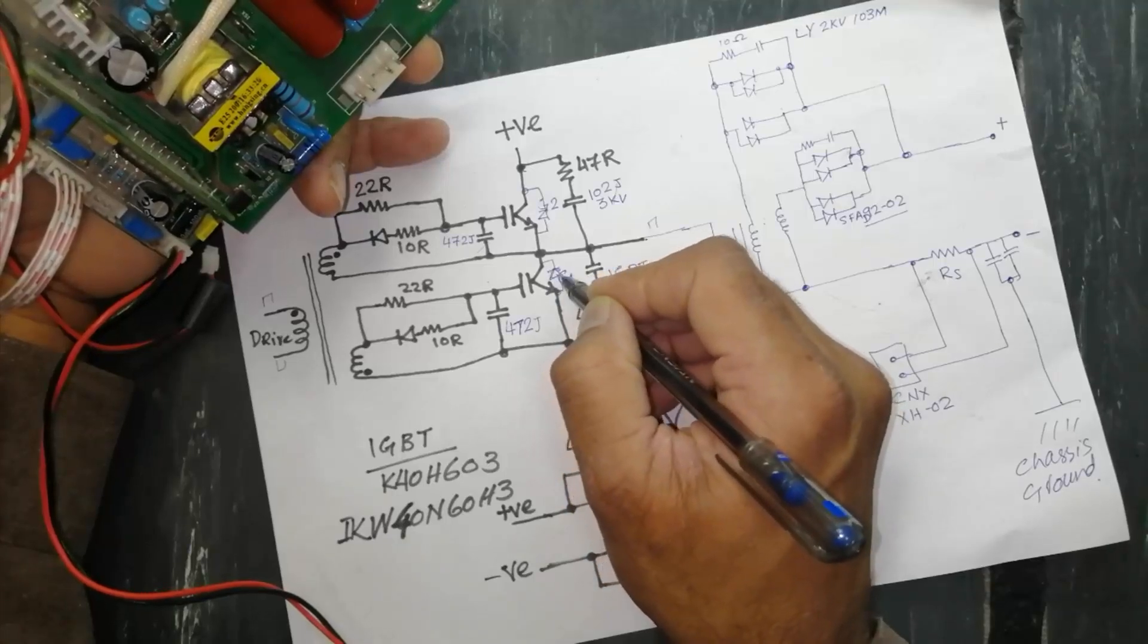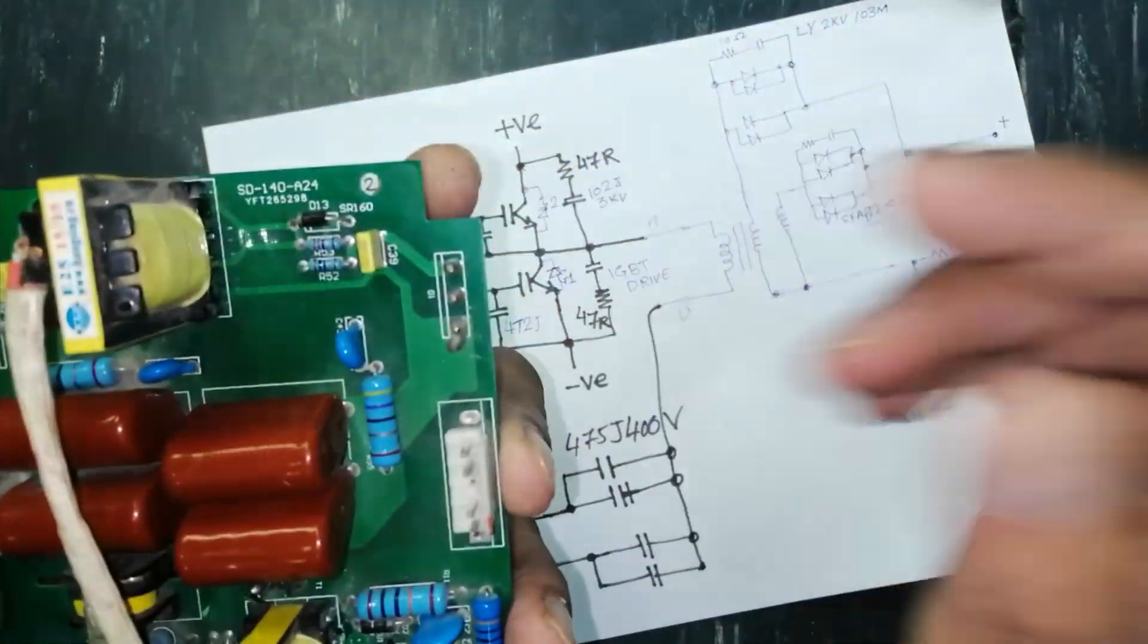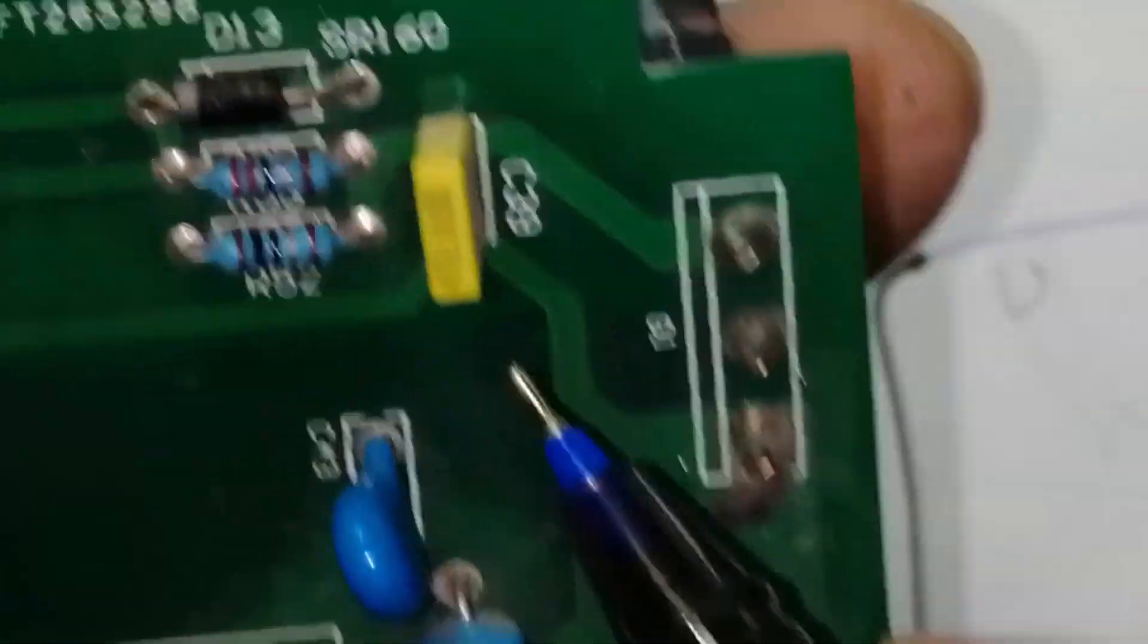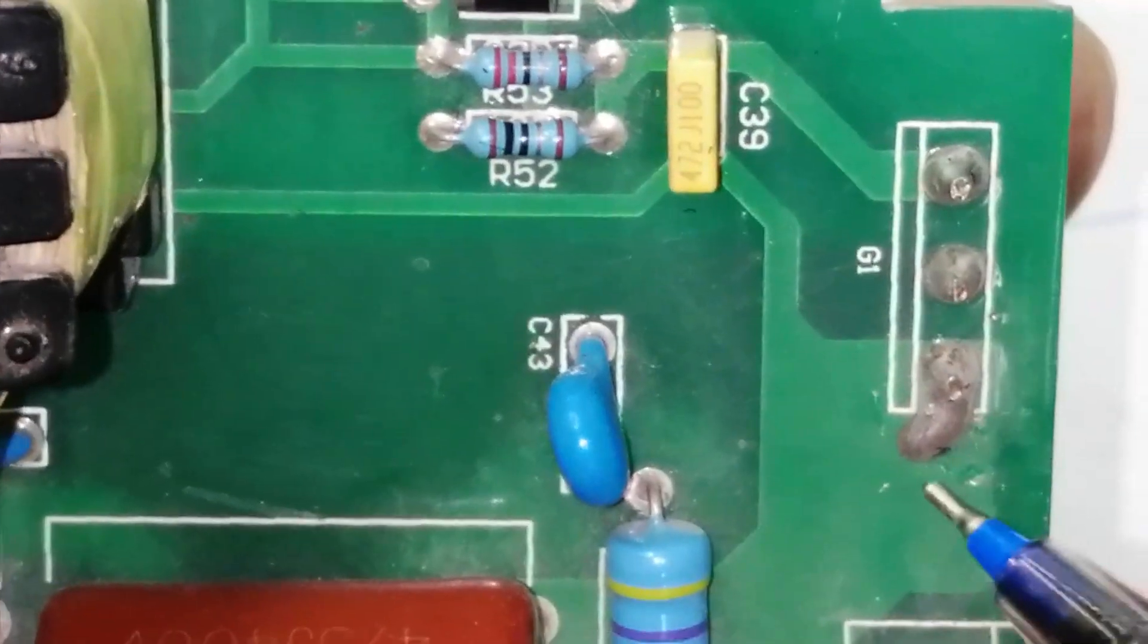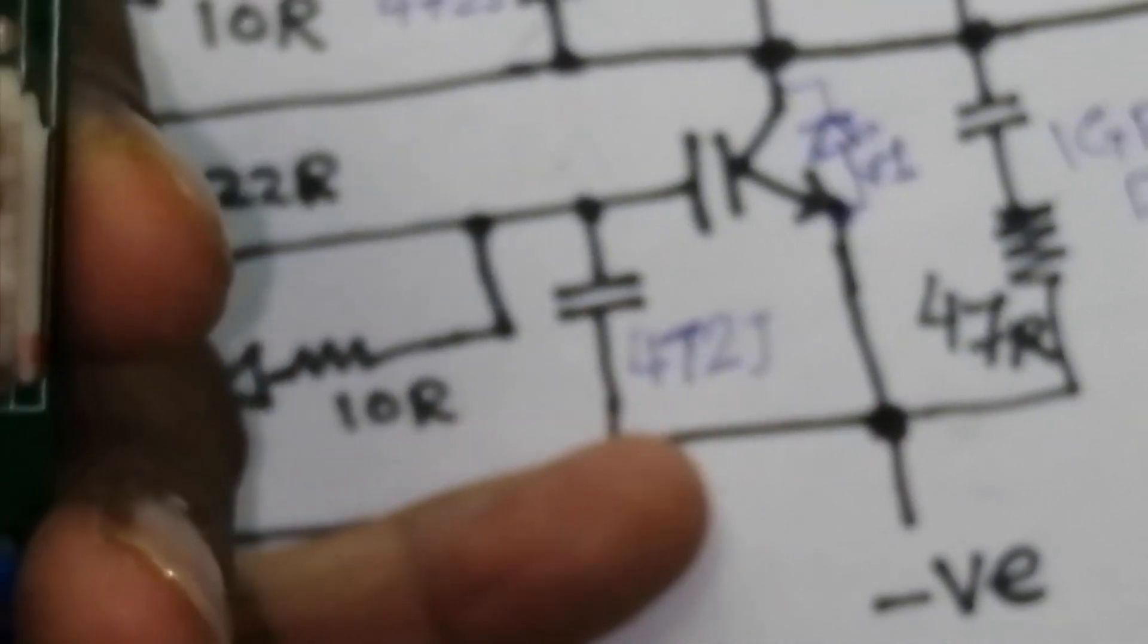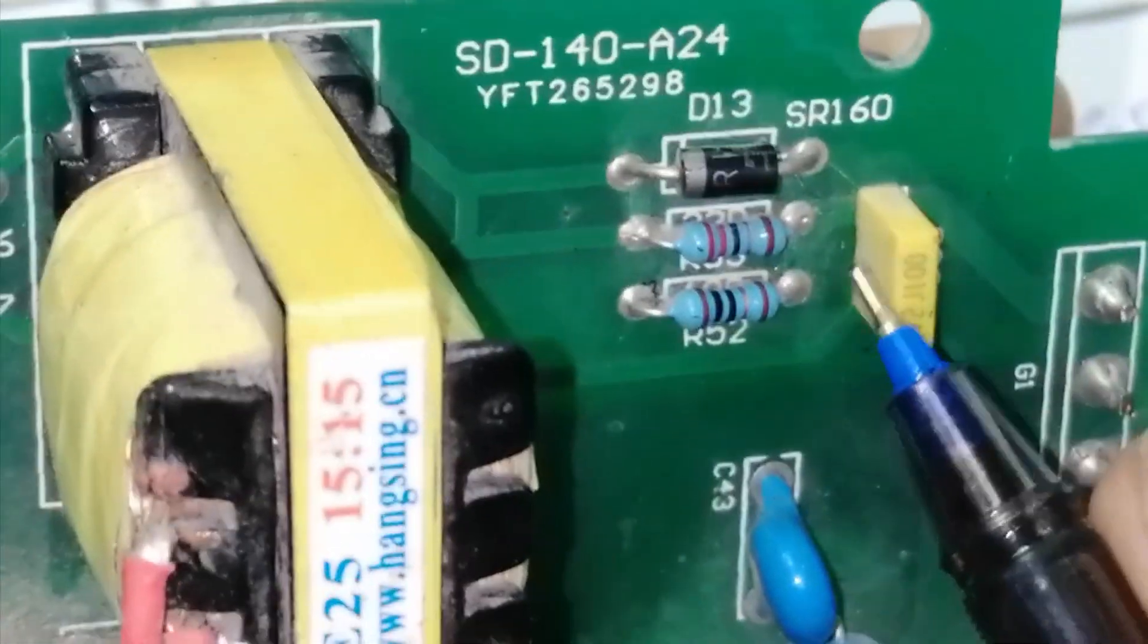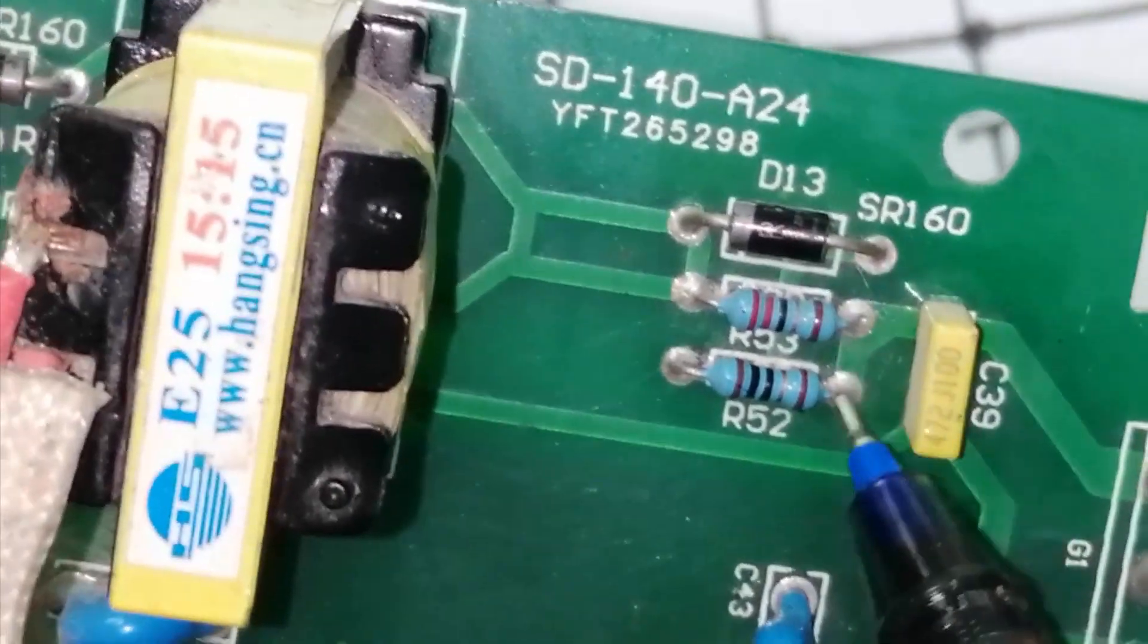Now we see the gate drive circuit. Both IGBTs have the same. This capacitor, if you see this is gate, this is emitter, there is a capacitor. There is one capacitor connected, 472J between gate and emitter. And the same gate is connected to two resistors, one is 22 ohm, second is 10 ohm.